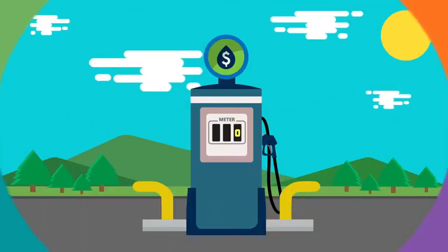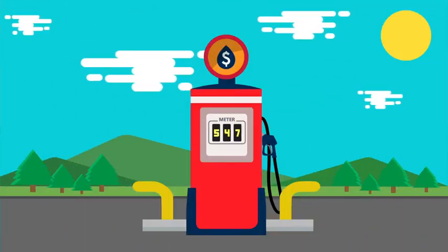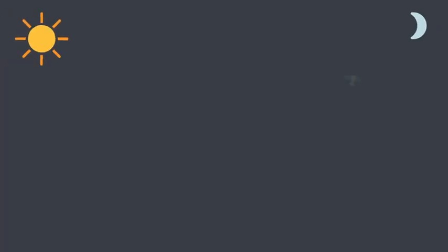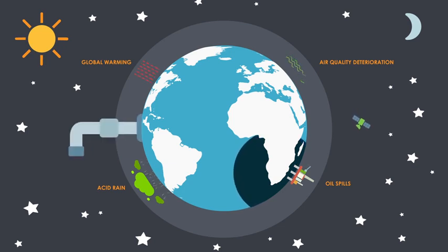How they affect our planet? Fossil fuels cost more than what we pay at the pump and impact our environment in many ways. These impacts include global warming, air quality deterioration, oil spills and acid rain. It's also projected that fossil fuel resources will be depleted within the next 50 to 100 years.